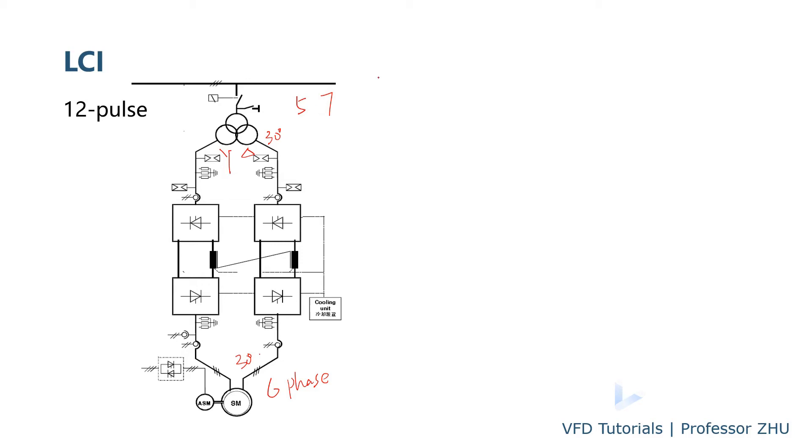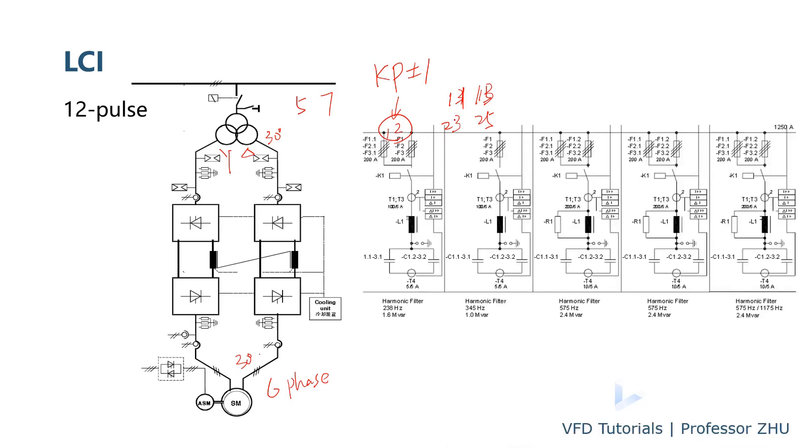In order to reduce the harmonic, people use two sets of LCI to drive the motor. The motor can use a six phase motor with two sets of winding and a 30 degree phase shift to cancel some of the torque ripple harmonics on the motor side. And on the line side, you will use three winding transformer. So the secondary of transformer will be one with the Y, another with the delta, and a 30 degree phase shift. So a lot of harmonics will be canceled by this kind of multi-pulse rectifier.